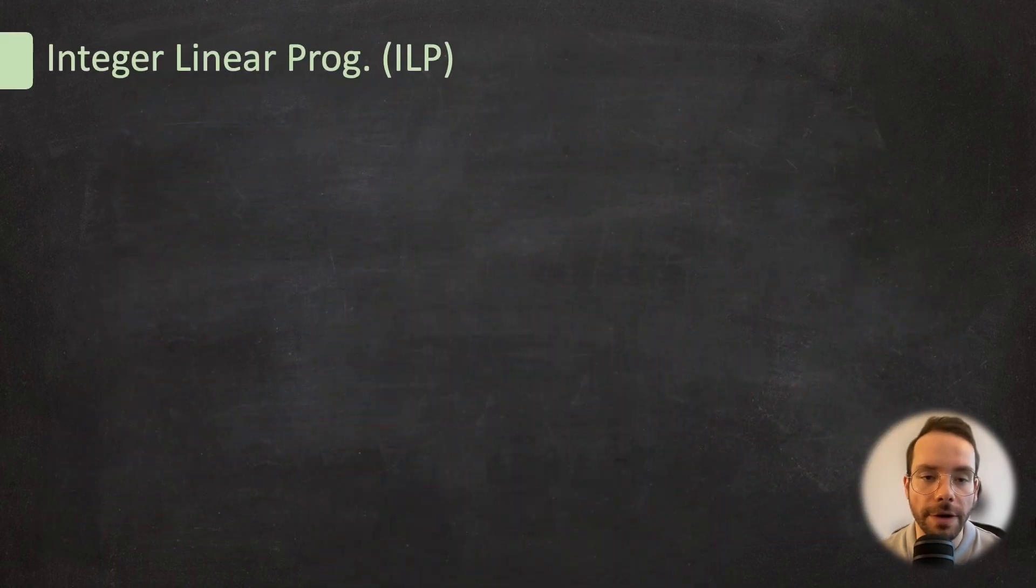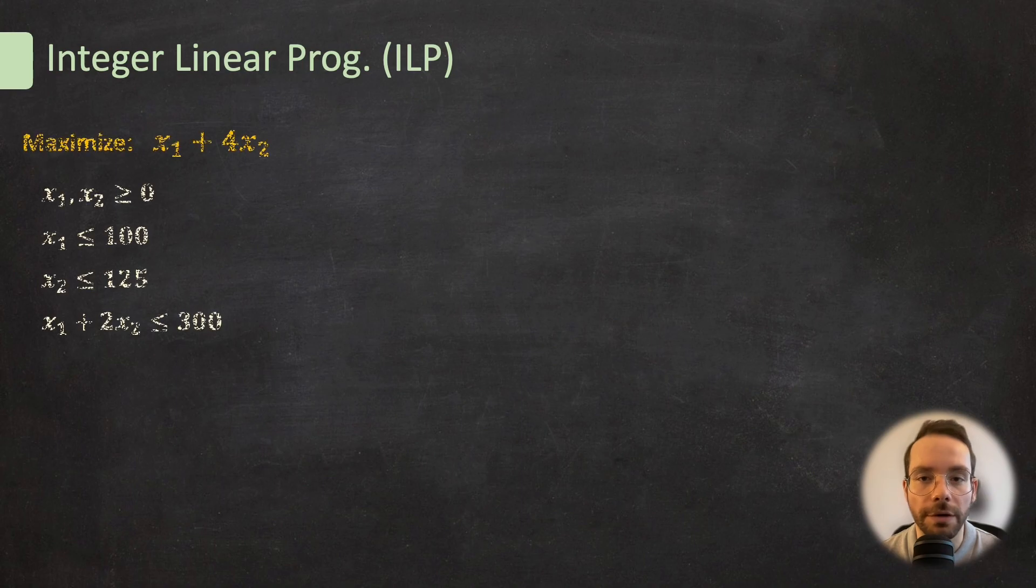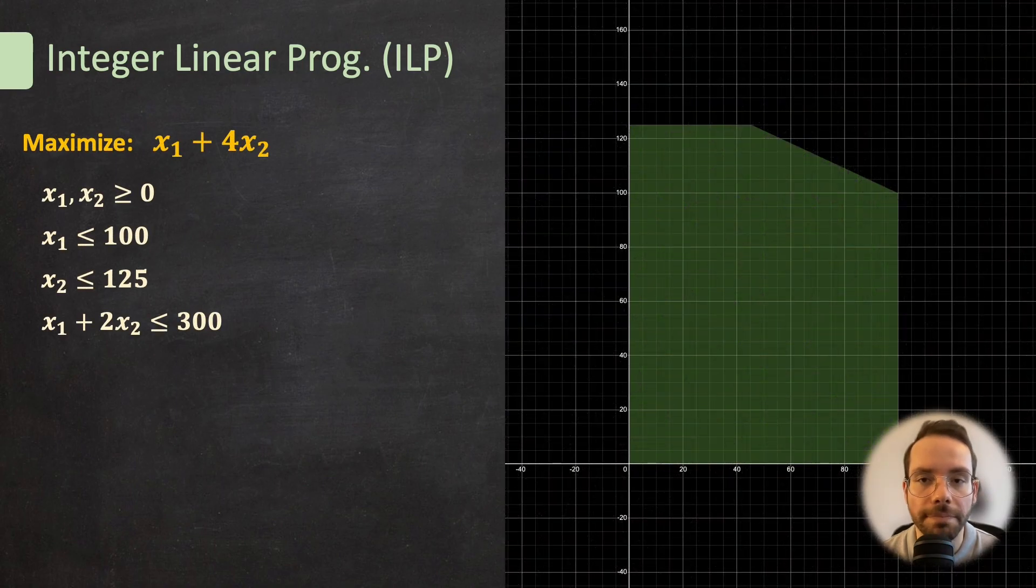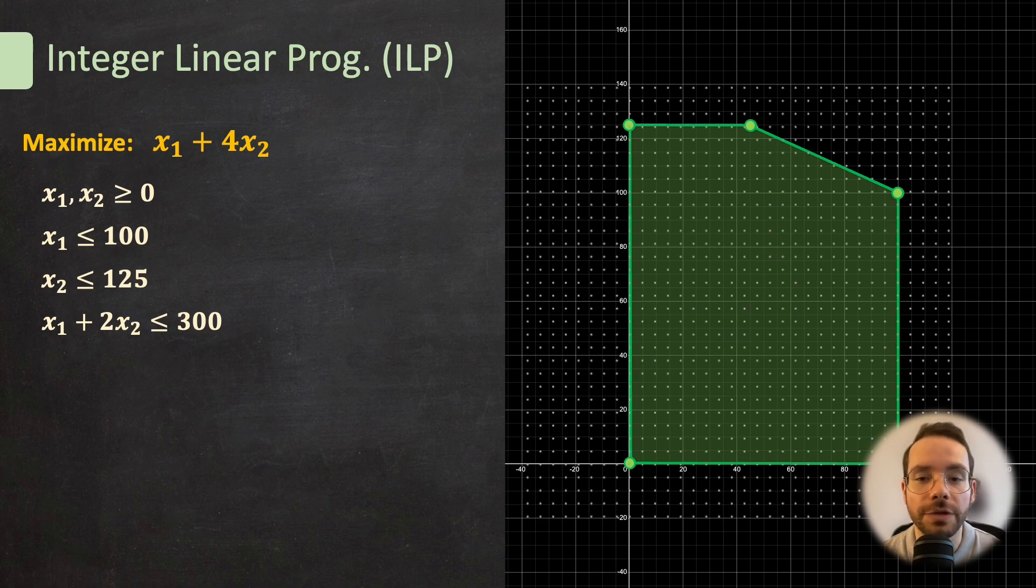Let me introduce another important concept here: integer linear programming. Remember the linear programming example that we solved earlier, the chair problem? This is in fact an integer linear programming problem where decision variables must take integer values. For example, it does not make sense if I say I'm going to make 125.7 chairs. That just does not make sense in the real world. But for simplicity, we ignored that fact and we treated that problem as a regular LP problem.